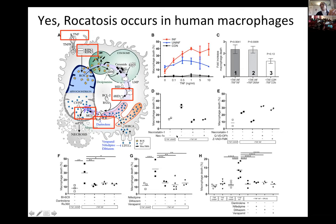All of this was initially done with Mycobacterium marinum in human macrophages. Then we went all out and showed it with the actual human TB bacterium — Mycobacterium tuberculosis. Again, you see the same: normal TNF versus high TNF with increased death, and each drug — dantrolene and the three calcium channel blockers — reverses it. We had discovered this entire pathway, been guided by human genetics to find it in zebrafish, and confirmed it all in human macrophages.